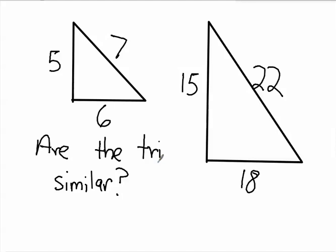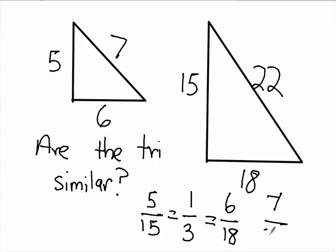And you just have to compare all the sides. So you do 5 over 15, and that equals 1 over 3. And then we know that 6 over 18 also equals 1 over 3, because 6 divided by 6 is 1, and 18 divided by 6 is 3. And then the last one we have to try is 7 over 22. Does 7 over 22 reduce to 1 over 3? No, it does not. So this one does not work, so the triangles are not, we'd have to say, no!